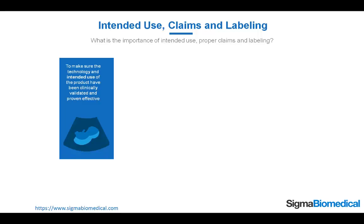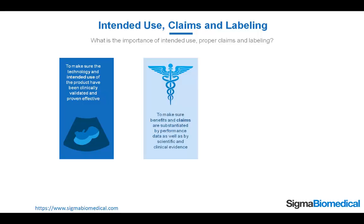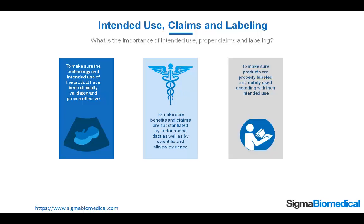Intended use, claims, and labeling. What is the importance of intended use, proper claims, and labeling? To make sure the technology and intended use of the product have been previously clinically validated and proven effective. To make sure benefits and claims are substantiated by performance data as well as by scientific and clinical evidence. And to make sure products are properly labeled and safely used according with their intended use.